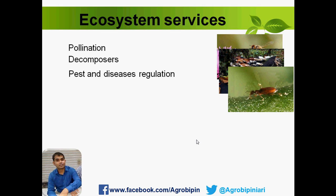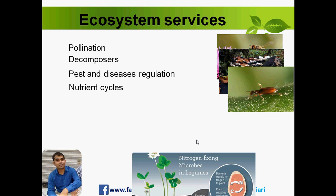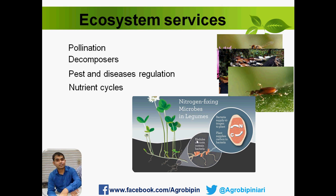Another ecosystem service is pest and disease regulation. When we grow only certain plants and animals, there is a chance of infestation by pests, but there will also be some natural enemy of those pests that can control their population. Additionally, nutrient cycling is critical — for example, symbiotic nitrogen fixation by Rhizobium bacteria fixes atmospheric nitrogen and makes it available to plants, playing a very important role in this cycle on the planet.